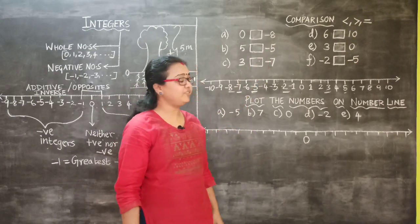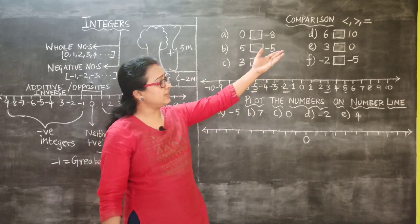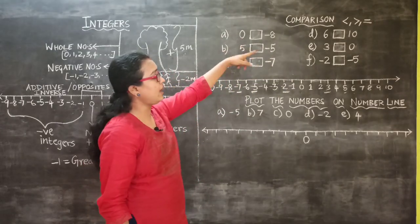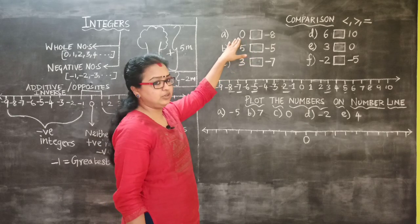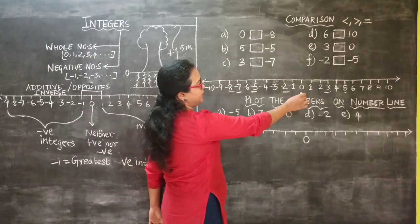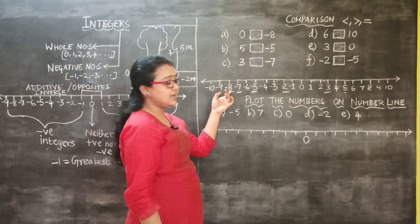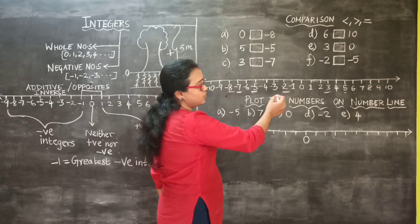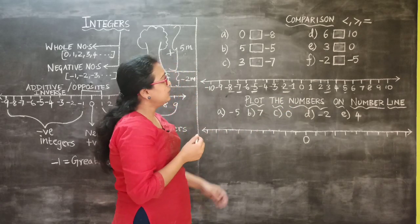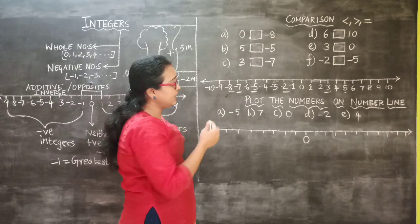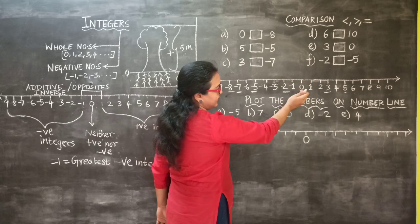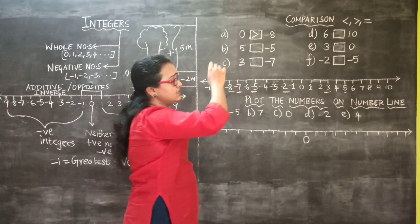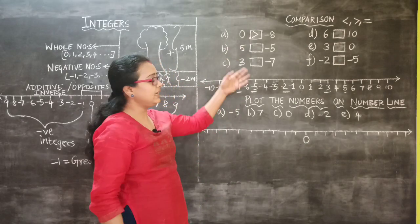Now we are going to learn how to compare integers by placing greater than, less than, or equal to symbols. The first question is 0 and minus 8 — which one is greater? Zero is the center point and minus 8 is 8 steps to the left. Since minus 1 is the greatest negative integer and 0 is to the right of it, 0 is the greater number. Numbers towards the right hand side are always greater.